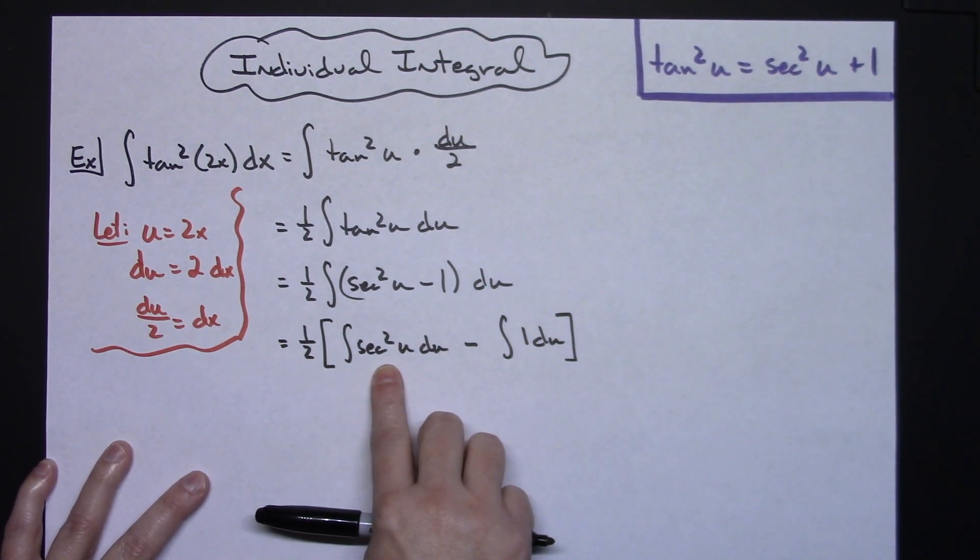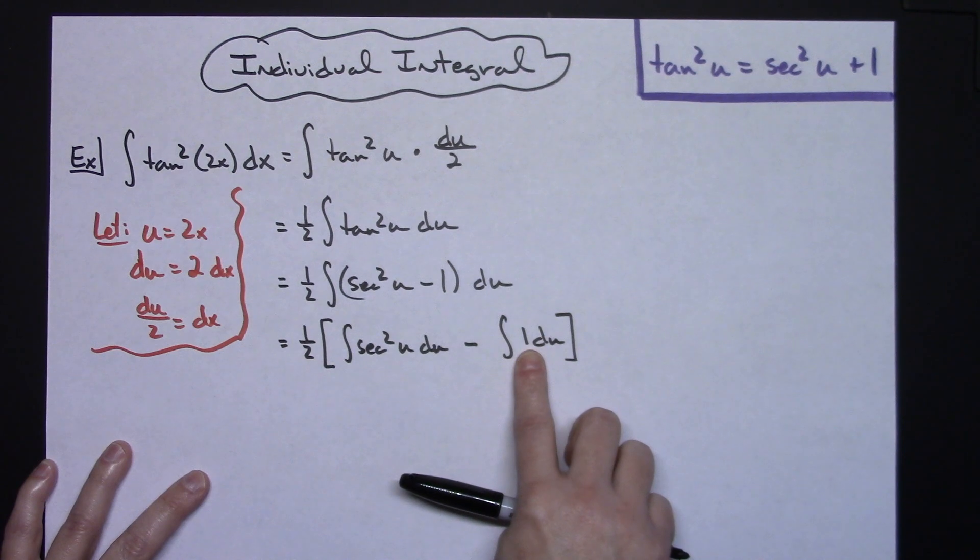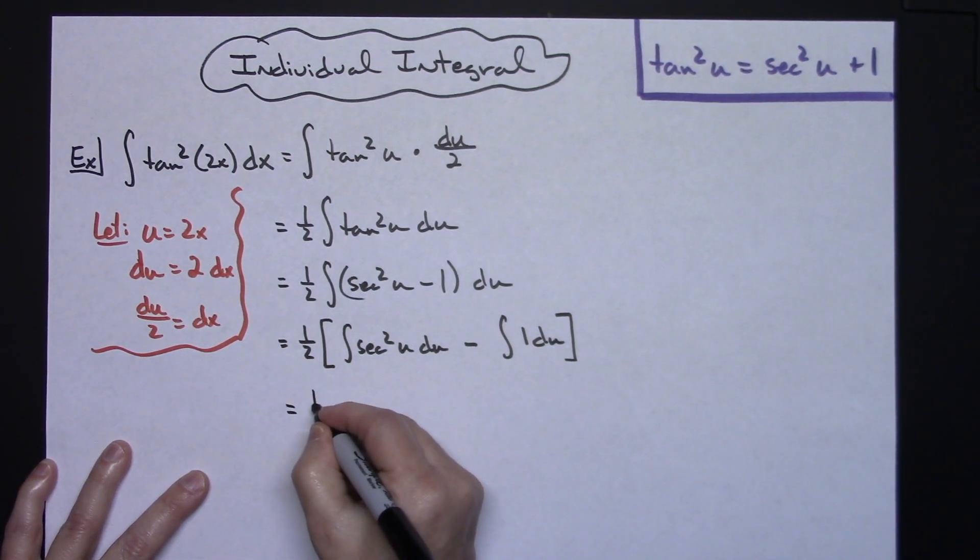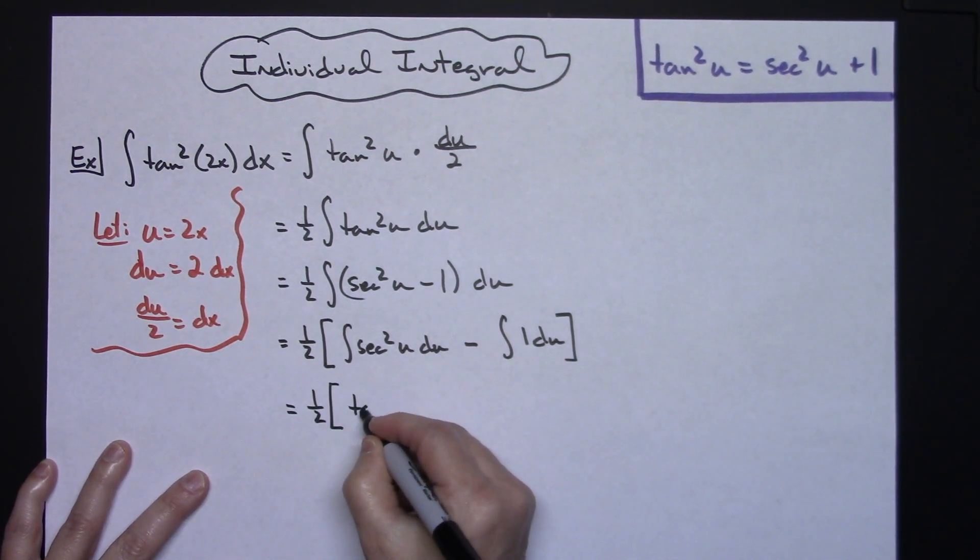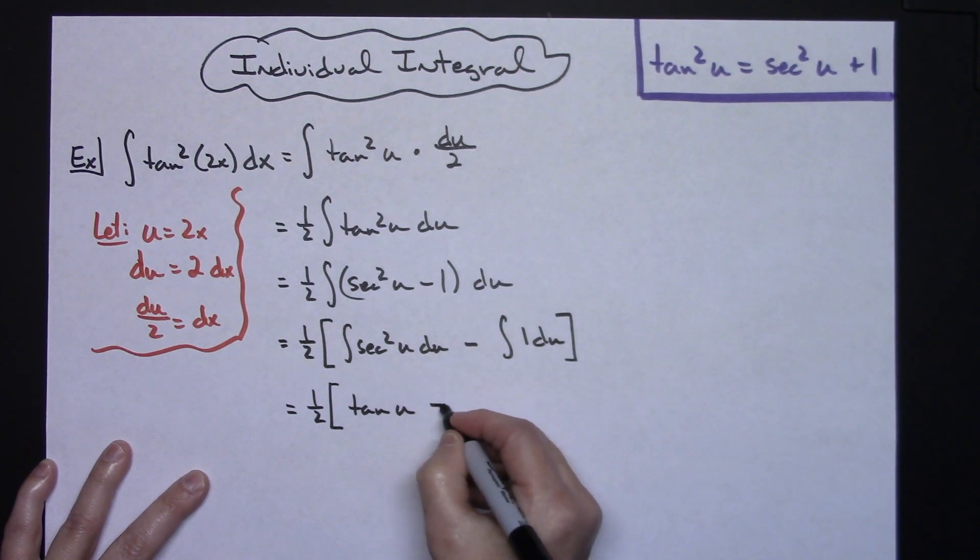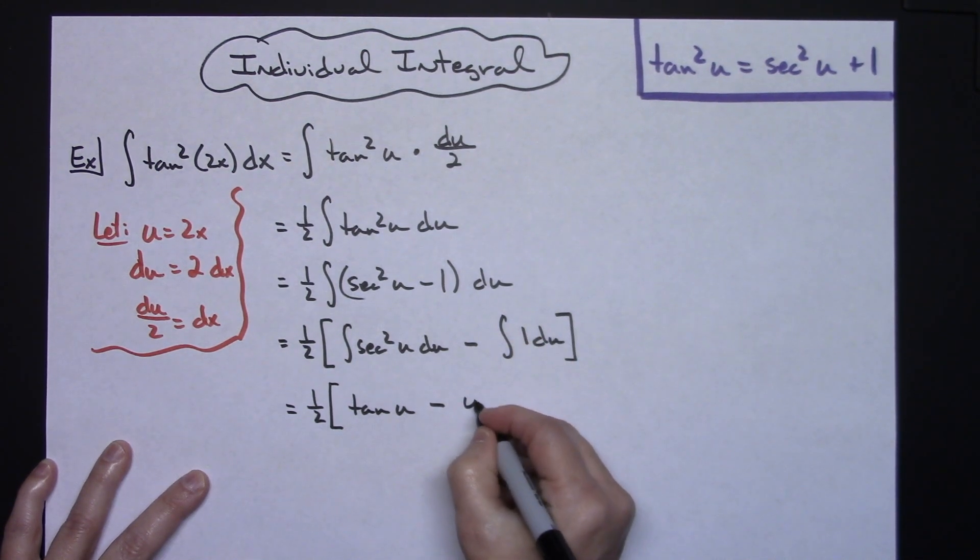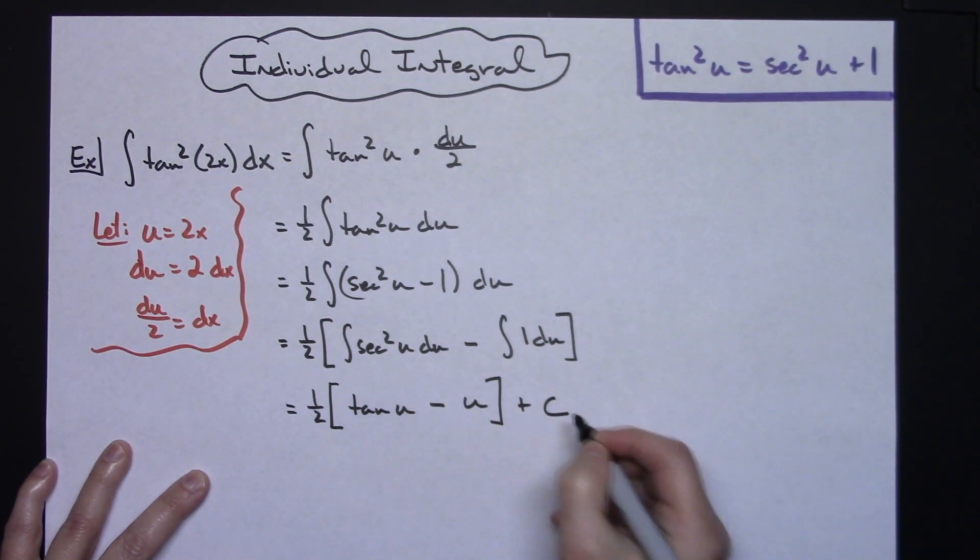From here, we know that the integral of secant squared is going to be tangent, and we know the integral of 1 du is just going to be u. So here it's straightforward integration. I'll have one-half, integral here is going to be tangent u, and then minus, integral here will be u, and then I'll have my plus C.